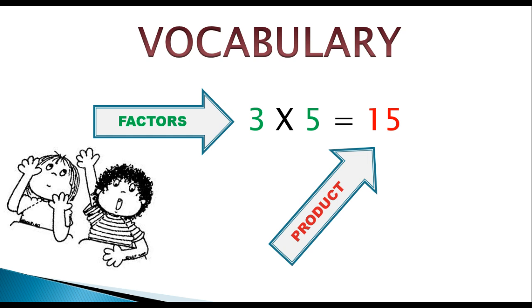So one more time, the product is the answer to a multiplication problem. The 3 and the 5 are the numbers that we are multiplying, and those are known as factors. Very good. Let's continue on.